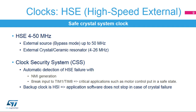The high-speed internal oscillator is a 16 MHz RC oscillator, which provides 1% accuracy and fast wake-up times. The HSI is trimmed during production testing and can also be user-trimmed. The HSI is selected as the clock at wake-up from stop mode, and as the backup clock if an HSE failure is detected by the clock security system.